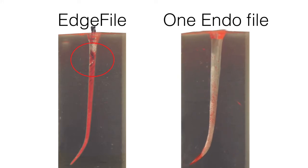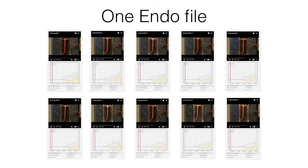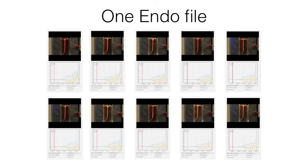Conversely, the One Endo successfully prepared its first block with ease, just as it did the next nine, with no apparent changes in the file, its performance, or in the quality of its preparations.